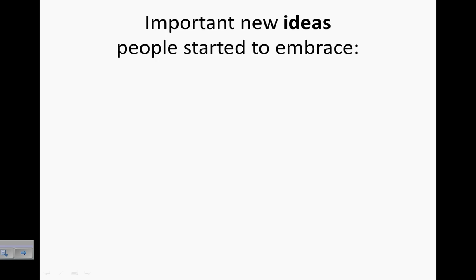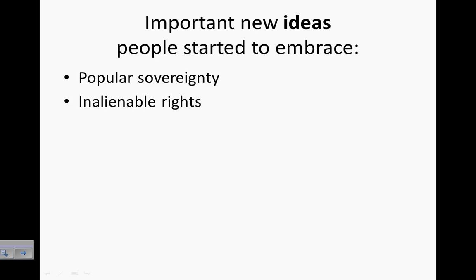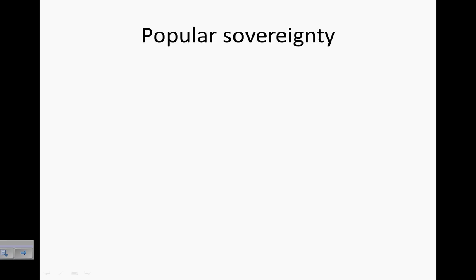These revolutions started with important new ideas that people really began to embrace. Those ideas are popular sovereignty, inalienable rights, and nationalism. I'm going to break each one of them down — that's what we're going to talk about today.